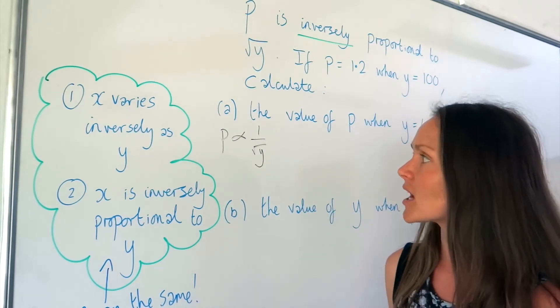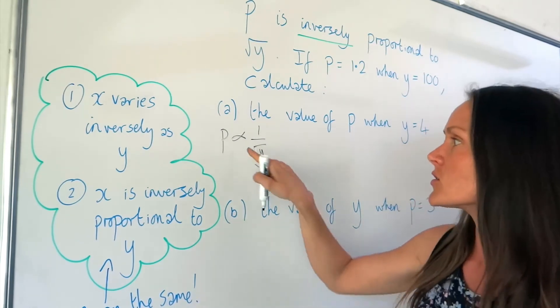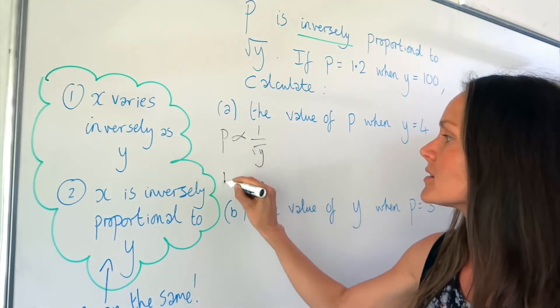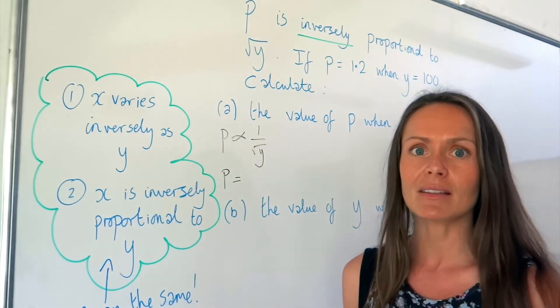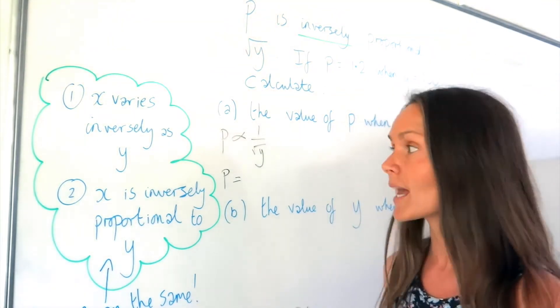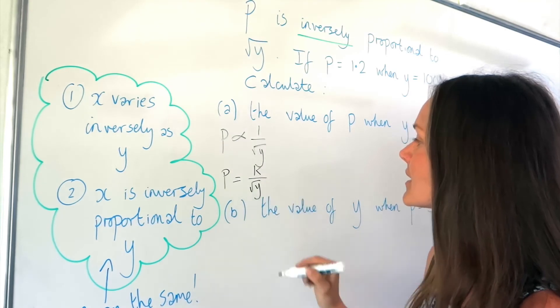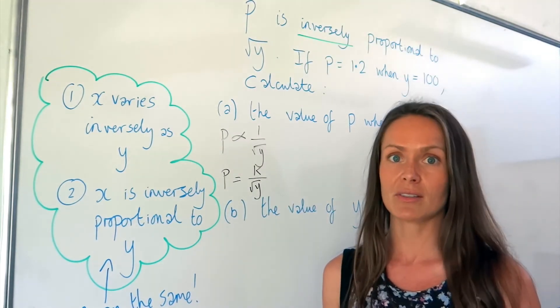So again, the first step is to find an equation. So we need to change that symbol to an equal sign. But when we do that, that number 1 now needs to be written as a constant, which we call K. So I'm going to call that K. Everything else stays the same. So to find that constant K...